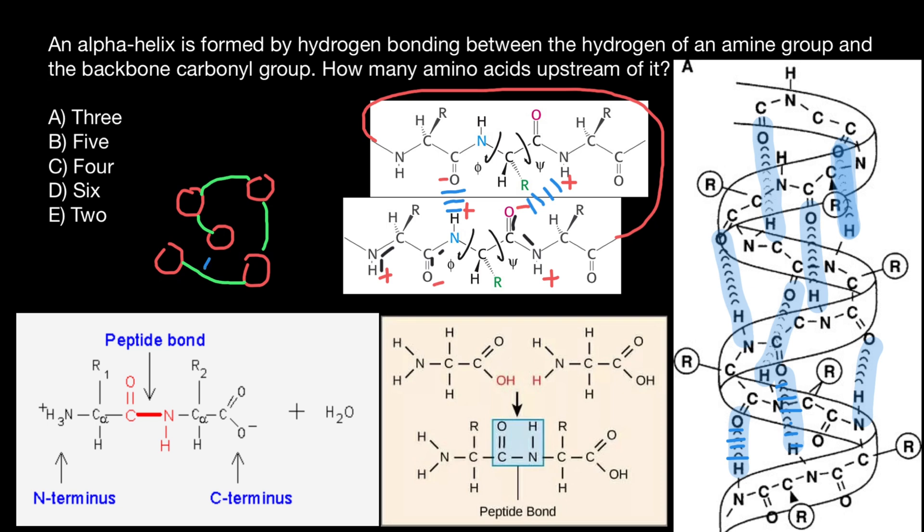There are about 3.6 amino acid residues per one turn. In each peptide bond, we have carboxyl group and amino group. As you see, amino group is slightly positively charged, carboxyl group is slightly negatively charged. So here we have our first hydrogen bond. According to this picture, the carboxyl group of the first amino acid is going to make a hydrogen bond with the amino group of the 1, 2, 3, 4, 5th amino acid. And there are going to be 1, 2, 3, 4 amino acids away from each other. And this is answer C.